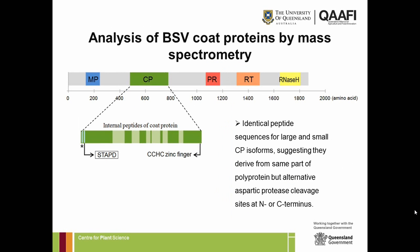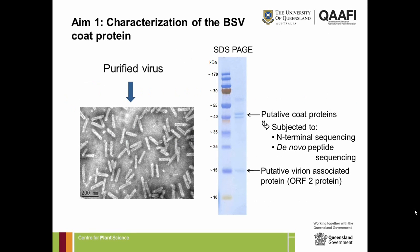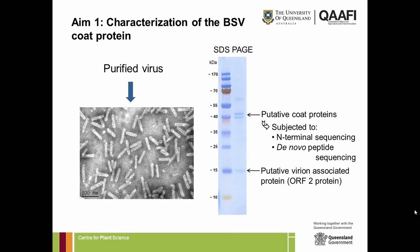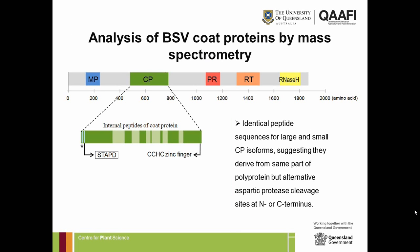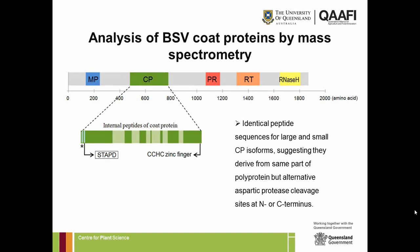She then subjected the coat proteins to mass spectrometry techniques — de novo peptide sequencing and N-terminal sequencing — that allowed her to precisely identify where in the polyprotein the coat protein occurred. She found two coat protein isoforms and was able to show that these isoforms were essentially the same, except for slightly different N-termini, indicating alternative cleavage sites utilized by the aspartic protease.